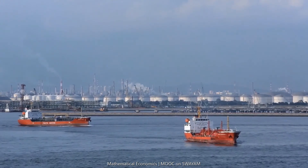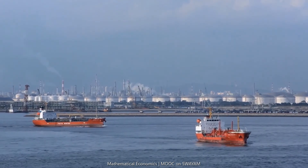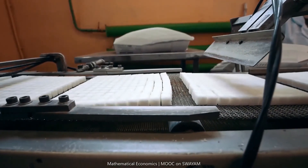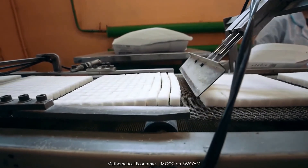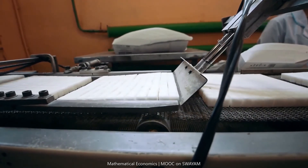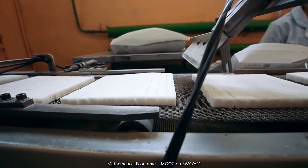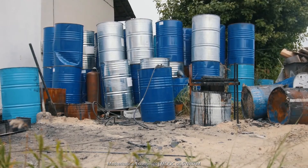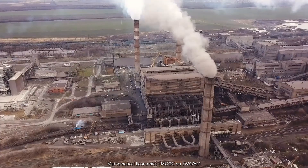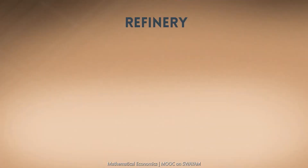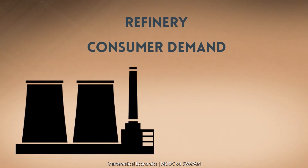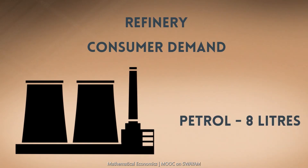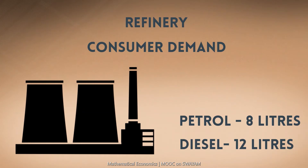There are nearly 160 different types of crude oil traded in the market, and each crude has different prices — some very expensive and some less expensive. Suppose a refinery is faced with a consumer demand of 8 litres of petrol and 12 litres of diesel.